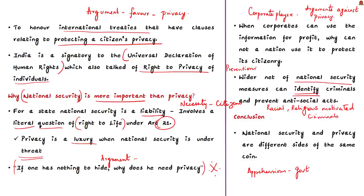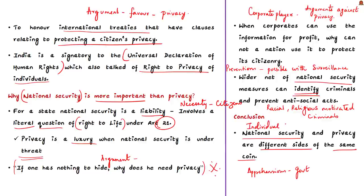National security and privacy are different sides of the same coin. An individual accorded the right to privacy enjoys freedom and feels secure in their own country. Remember, national security is not only about security but also about individual well-being. The right to privacy, when given emphasis, will only aid in the bigger picture of national security. Students are free to take their own stand on this issue.